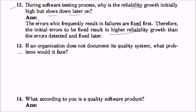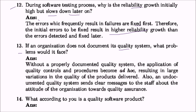If you are not documenting your quality system, what problems are you going to face? Without a properly documented quality system, the application of quality controls and procedures becomes ad hoc, resulting in large variation in the quality of products delivered. An undocumented quality system also sends a clear message to staff about the organization's attitude towards quality assurance. You need to document the quality control and assurance system and make sure it is implemented.